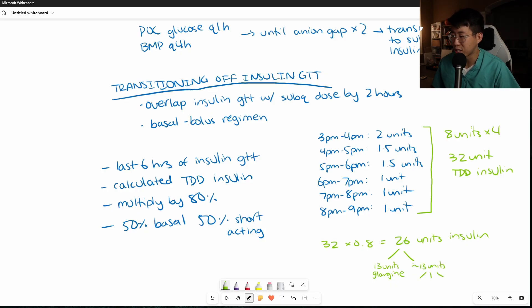And then they're going to get 50% of that split up into short acting units divided among all their meals. So it doesn't work out super perfectly, but basically it's going to be about 13 units of short acting. So split among breakfast, lunch, and dinner, we can just say four units of aspart with breakfast, four units of aspart with lunch, and then four units of aspart with dinner. So that's how you're going to calculate based on the last six hours of the patient's insulin drip. We're going to calculate this subcutaneous regimen of 13 units of glargine and four units of aspart with meals. And then of course you're going to add your sliding scale insulin on top of that as well.